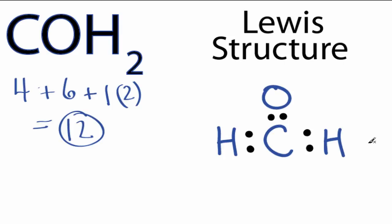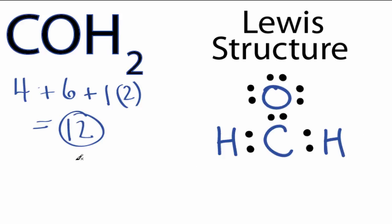Hydrogen only needs 2 valence electrons, so its octet is full — that accounts for 2, 4, 6 electrons used. And then around the oxygen: 8, 10, 12, to give that an octet. So we've used all 12 of the valence electrons.